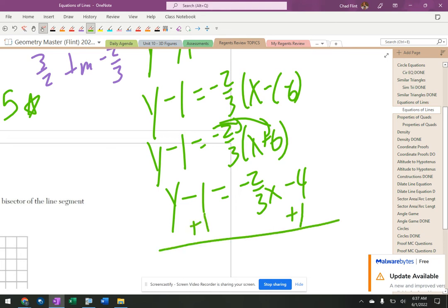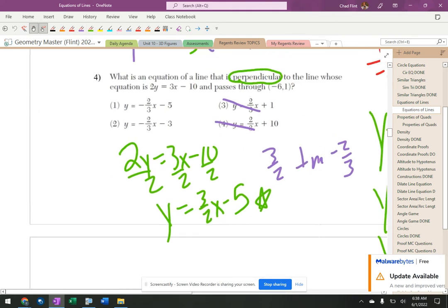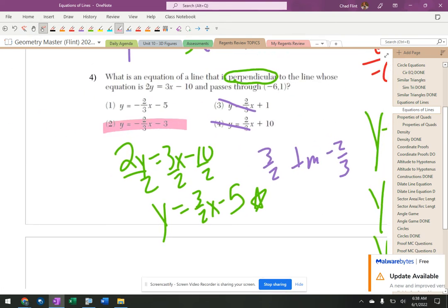Plus 1, plus 1. Just y equals negative 2 thirds x minus 3. So I solved that for y, and look at that, there's the answer right there.